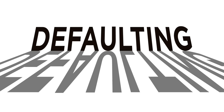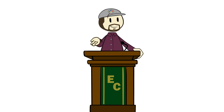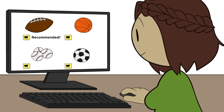The next type of choice architecting is defaulting — not on your mortgage; Tom Nook would have your guts for garters. We're talking about setting a default option. For instance, if you're going to buy something online, the way the sort is set on the store page or what is defaulted to the top slots when you search encourages purchases of those items.